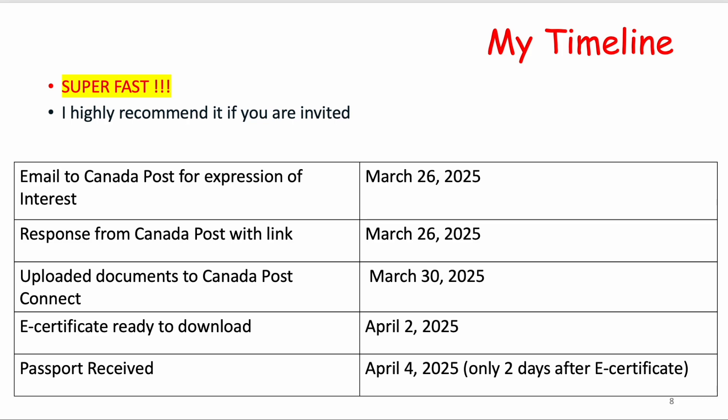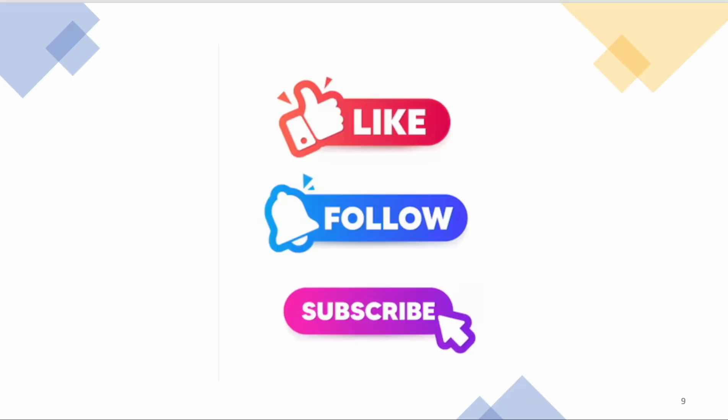To show how fast this application is, here is my personal timeline. I sent my expression of interest email to Canada Post on March 26th and received a response with the registration link the same day. It took me about four days to gather my documents, and I uploaded everything on March 30th. My e-certificate was ready to download on April 2nd, and I received my passport on April 4th — they printed and shipped it in just one day. Hope this is helpful to someone who has received an invite. Like, follow, and subscribe for similar videos.